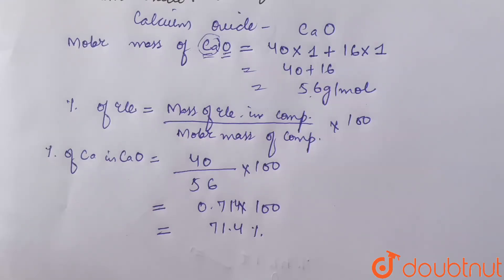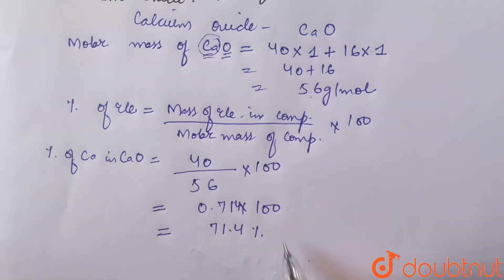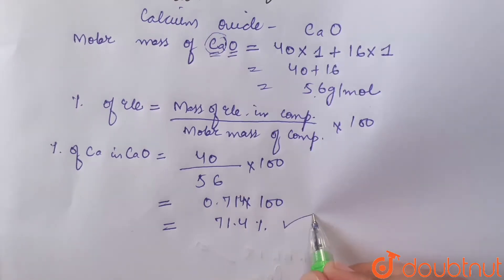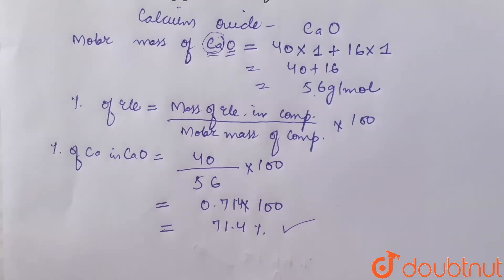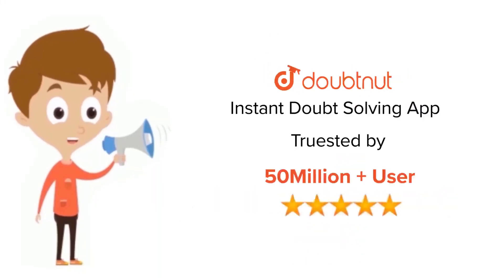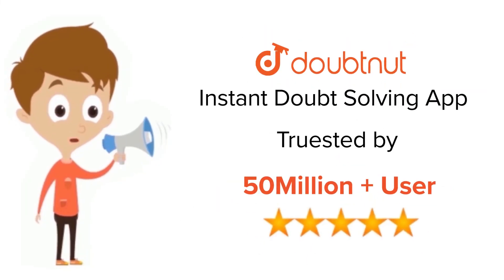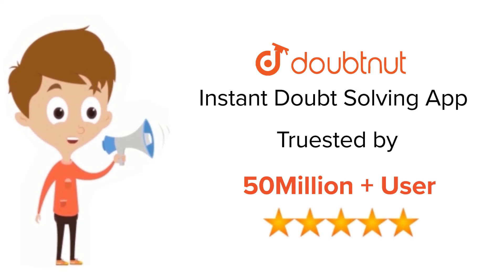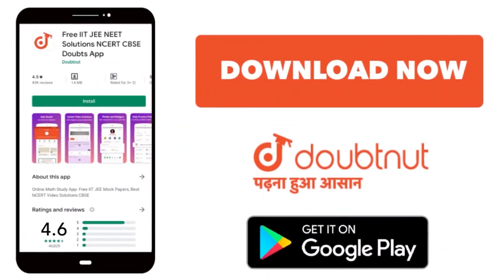Hence, the percentage of calcium in calcium oxide is 71.4 percent. Thank you. For class 6 to 12, IIT JEE, and NEET level — trusted by more than 5 crore students — download the Doubtnut app today.